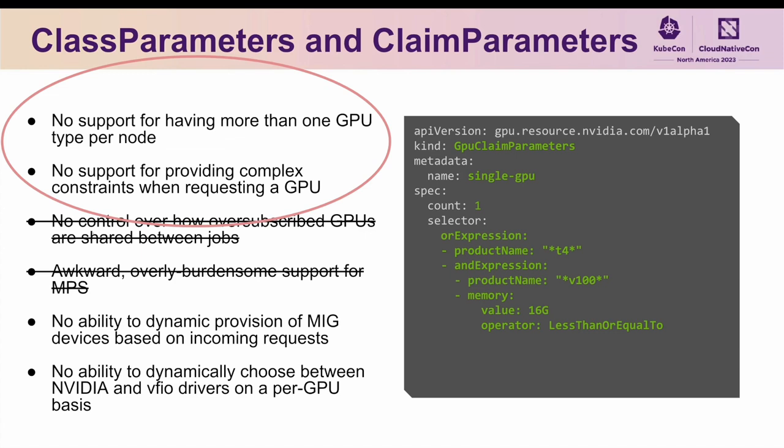The set of constraints that can be provided here are basically anything you would be able to query about the GPU using NVIDIA SMI. And under the hood, the DRA driver for GPUs will not discriminate where these GPUs come from, meaning that you can now place different types of GPUs on the same node if desired.